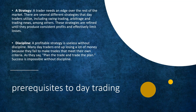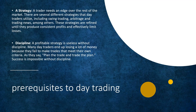There are two important prerequisites. Number one is a good strategy — a trader needs an edge over the rest of the market. There are several different strategies traders can utilize, including swing trading, arbitrage, and trading news, among others. These strategies are refined until they produce consistent profits and effectively limit losses. A profitable strategy is useless without discipline. Many day traders end up losing a lot of money because they fail to make trades that meet their own criteria. As they say: plan the trade and trade the plan. Success is impossible without discipline.